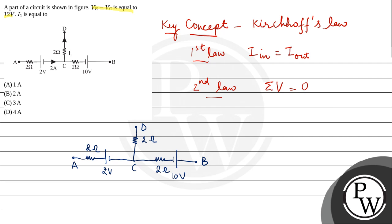In this circuit, the current incoming is 2 amperes and the current outgoing is I1. So here the current will be 2 minus I1.